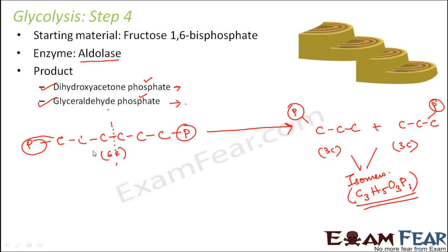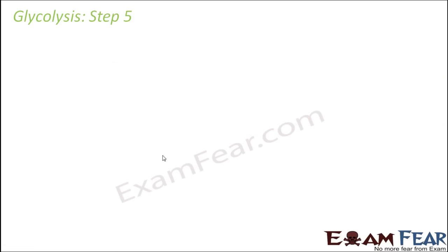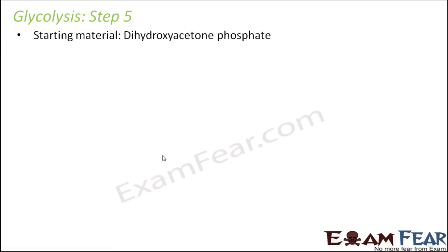So finally in step 4, the six-carbon compound got split into two three-carbon compounds. Let's see what happens next. In step 5, the starting material is going to be dihydroxyacetone phosphate, which was formed in step 4. In step 4, two products were formed.